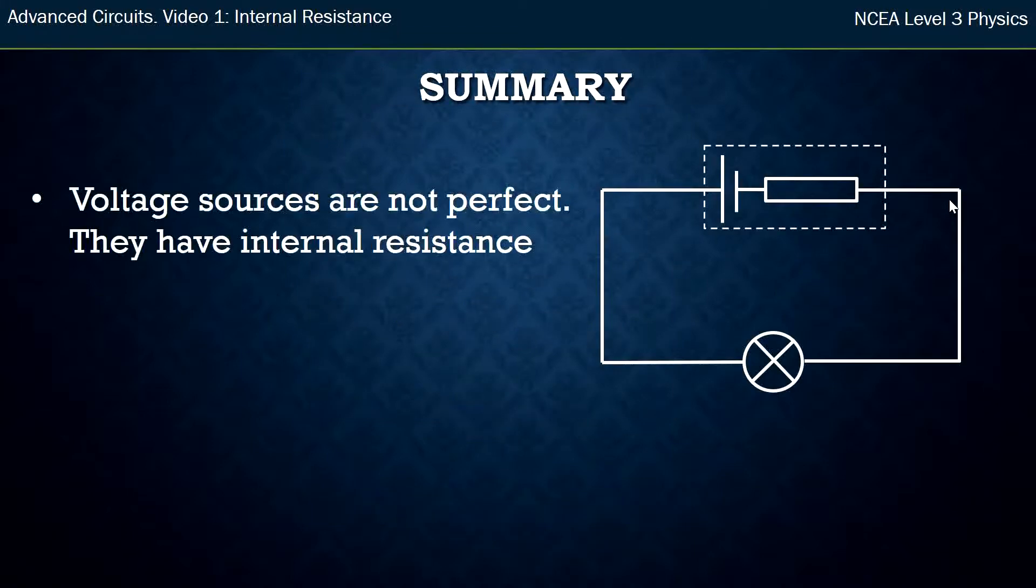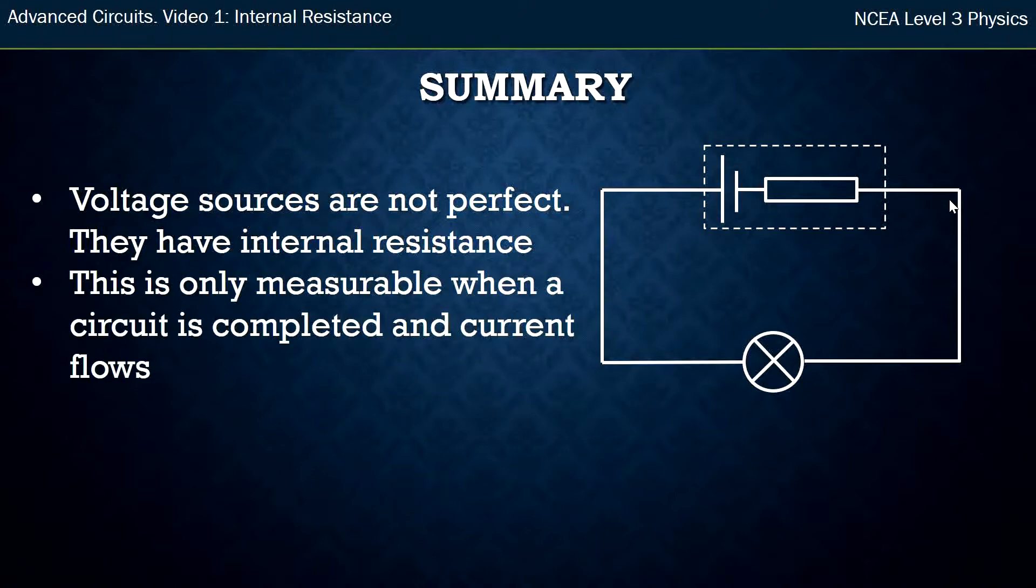So in summary, voltage sources like batteries and power packs are not perfect. They have internal resistance. But that internal resistance, you'll see it's only measurable when there's a circuit complete and current is flowing. When I had the switch open, I just measured the true value. It was only when the switch was closed and the light bulb was on that I measured the lesser value.